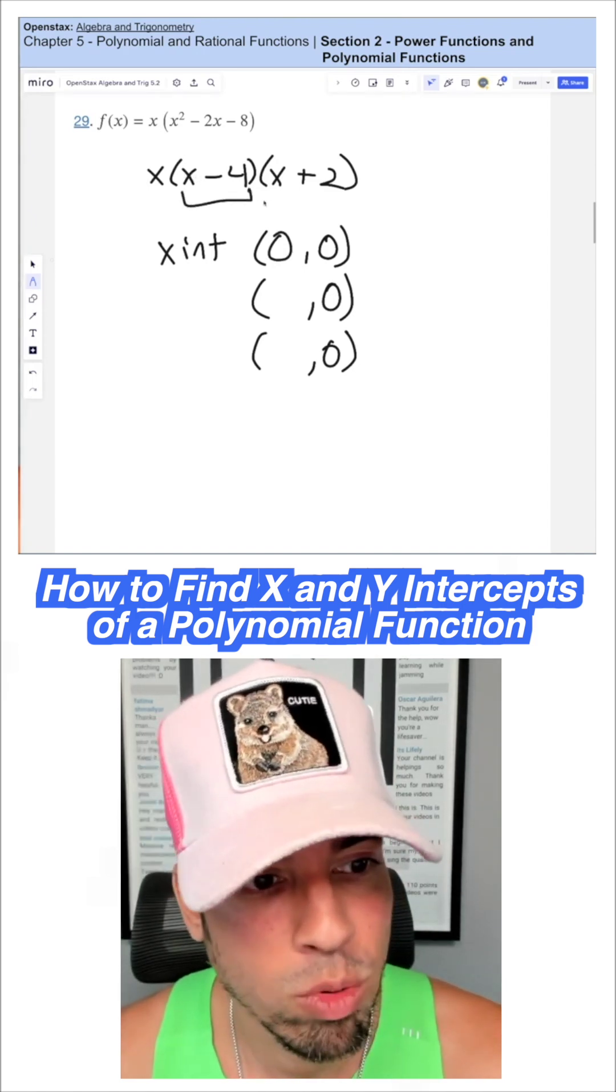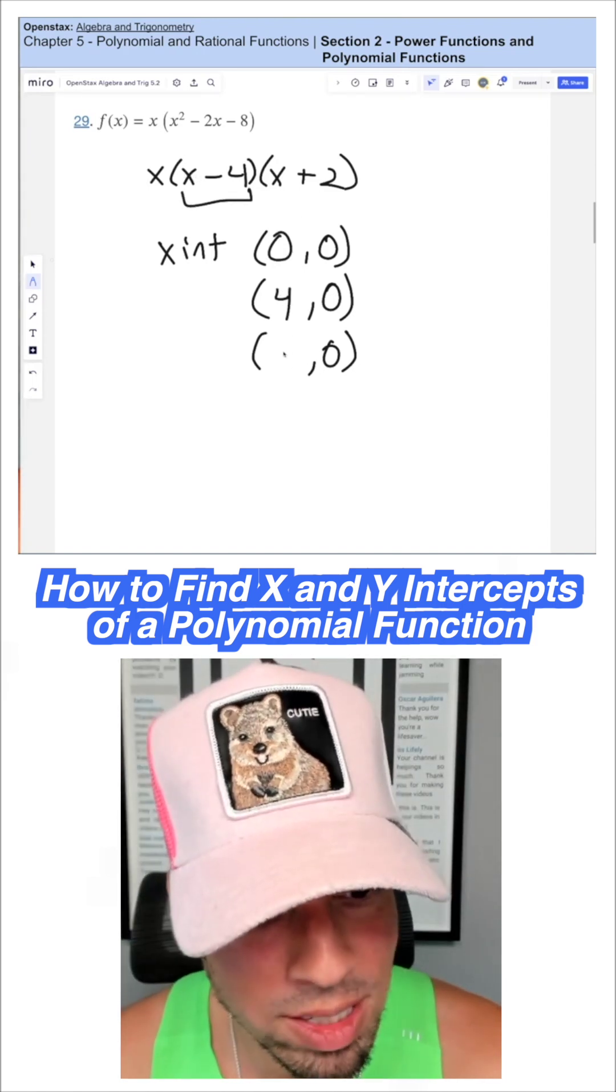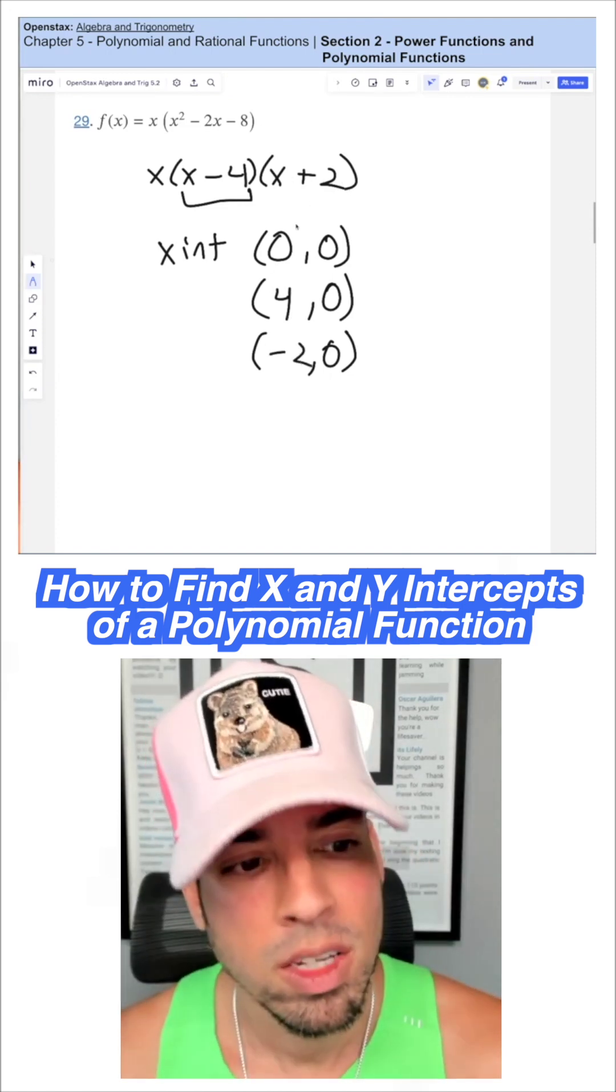We also have for this one, what's going to zero that out? Positive 4. And then what about this one? It's going to be negative 2. Negative 2 plus 2 is zero.